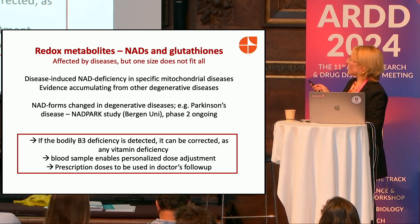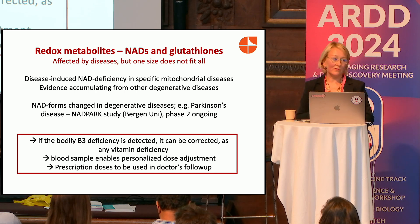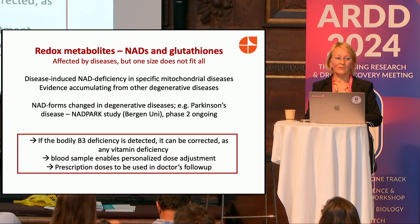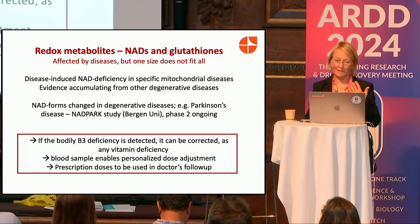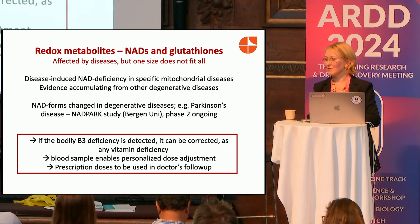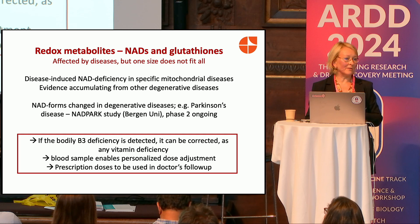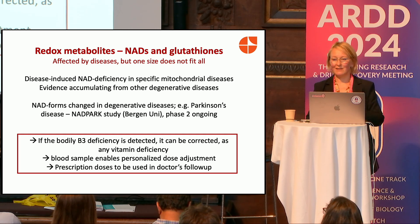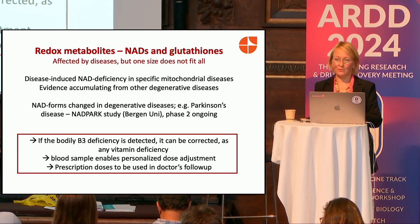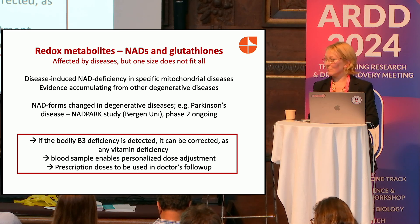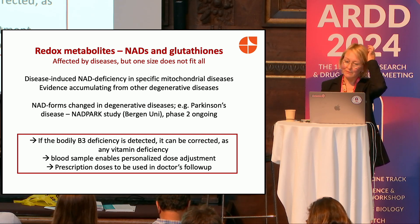Redox metabolites — NADs and glutathione — are affected by disease, but not by every single disease. They are not changed in every single mitochondrial disease, which is why we want to measure them and treat them as we would for vitamin B12 or vitamin D deficiency: if it's low, we give it. This is just vitamin B3.